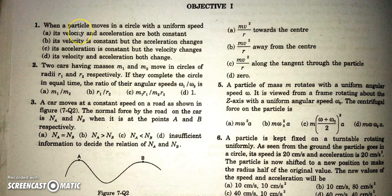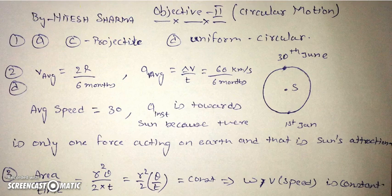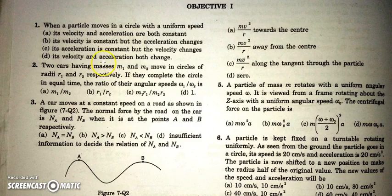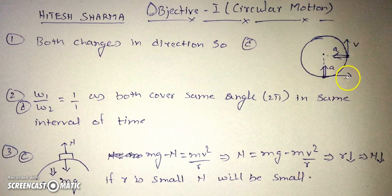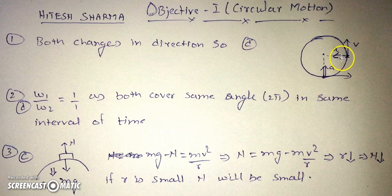Let's start with the first question: when a particle moves in a circle with uniform speed, what happens? Its velocity obviously changes because the direction changes, and its acceleration also changes because the direction changes. You can see from the diagram that the velocity at the bottom-most point is towards the right and acceleration is upward towards the center.